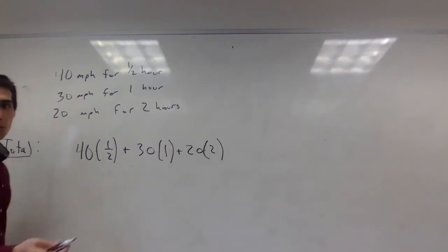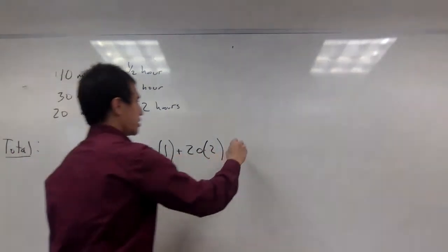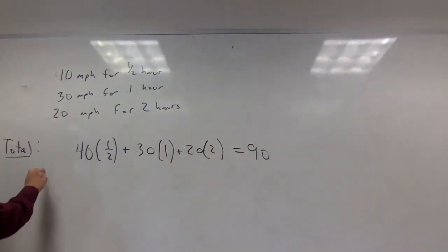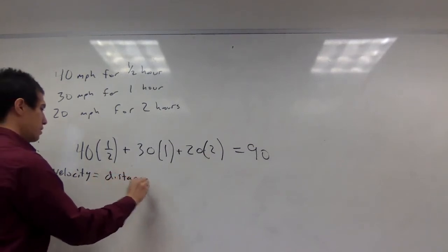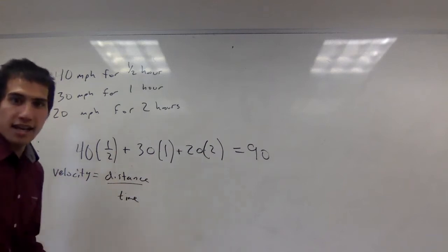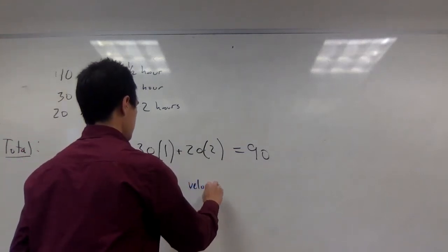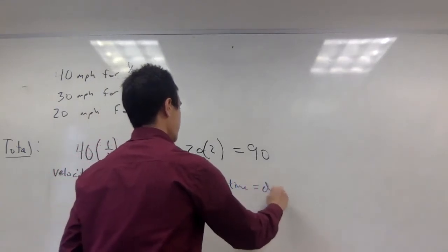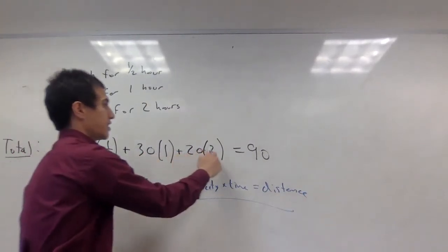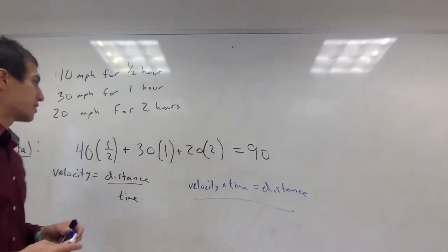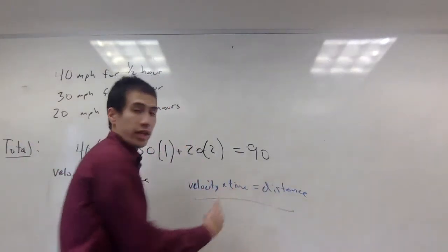When we calculate the total distance we traveled, we just add those things up. So this is 20 plus 30 plus 40, which is 90 miles total. Notice what I'm using here is that velocity equals distance over time, and if I rewrite this by multiplying by time, this is exactly velocity times time equals distance. Each multiplication of velocity times time gives me the total distance for that segment.